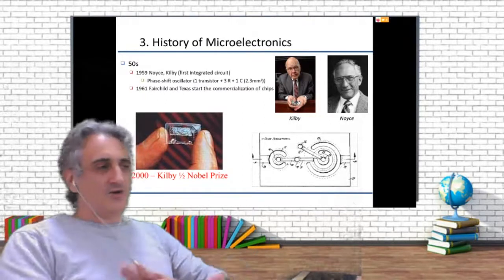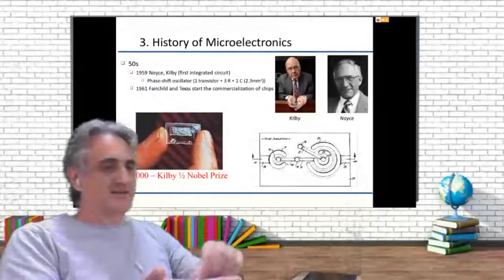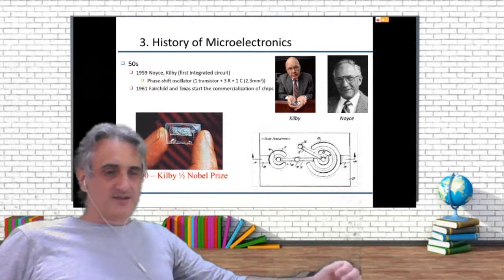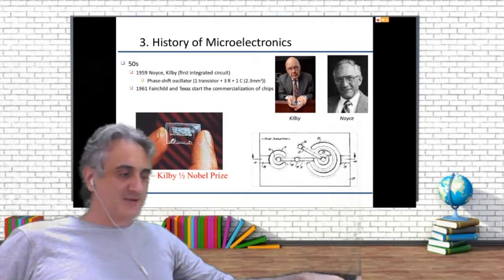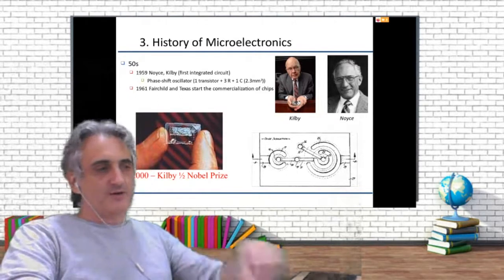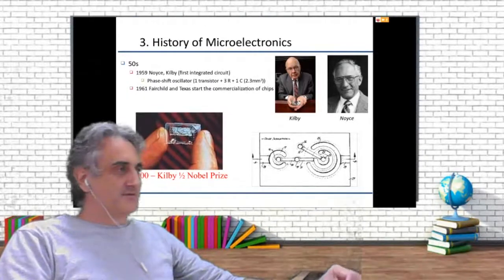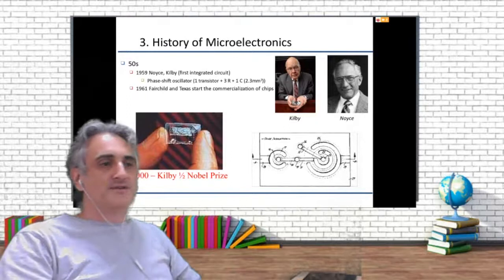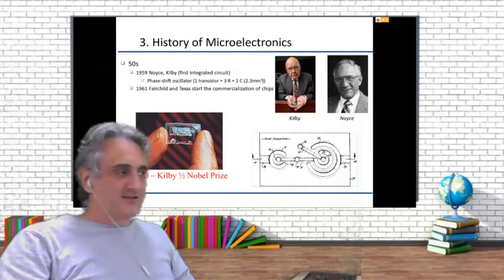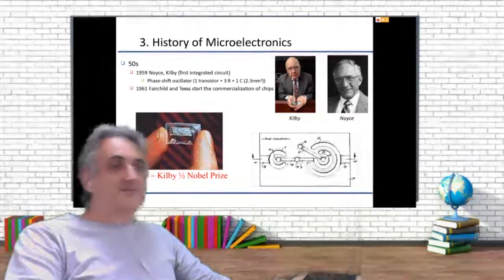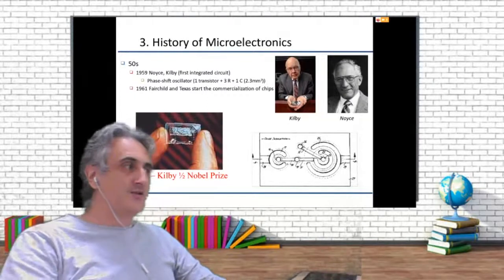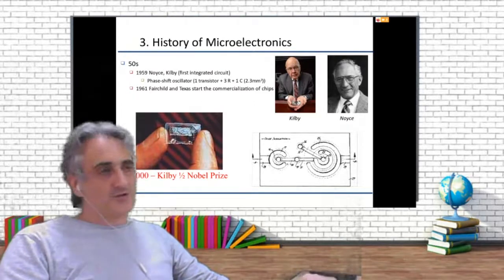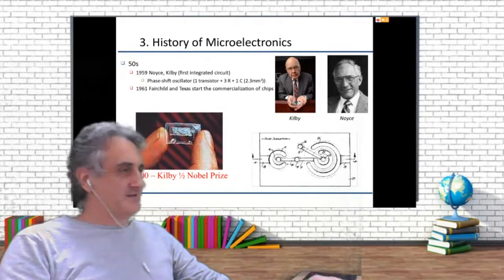What Kilby did was getting all the circuits inside the same substrate and putting some cables inside — predefining a kind of integrated circuit. What Noyce proposed was getting all the transistors fabricated on the same substrate and then using a metal layer to interconnect all of them — a much better idea. And this is what we are actually using today, not just one metal layer but up to 30 metal layers.